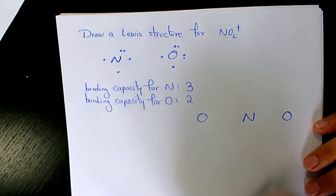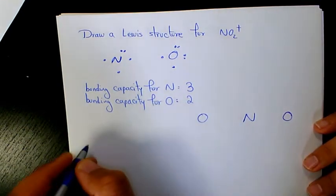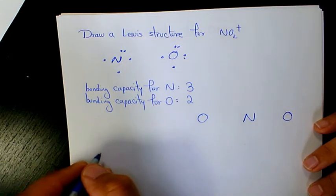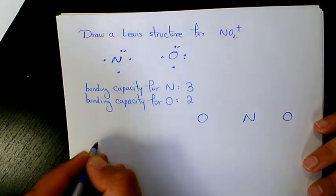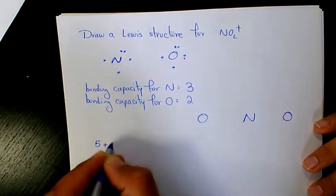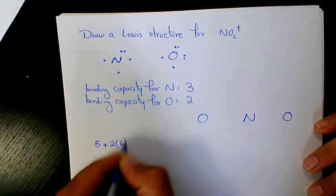And then I need to count the total number of valence electrons available in an atom. So nitrogen is five, oxygen we have two of them and each of them is six.